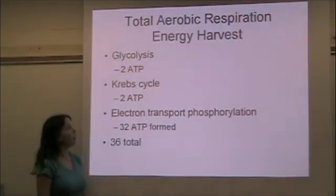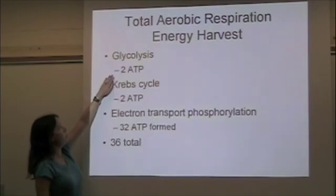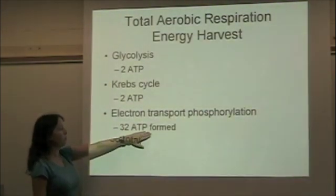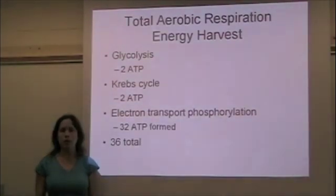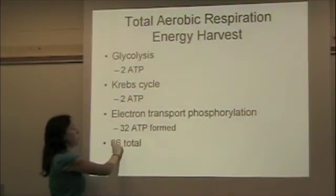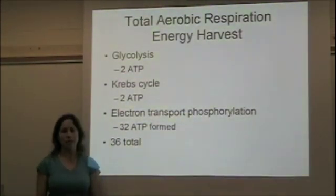Looking at the sum total of aerobic respiration: we made 2 ATP in glycolysis, 2 ATP in the Krebs cycle, and through the ATP synthase and the hydrogen ion gradient, 32 ATP in electron transport phosphorylation. In total, aerobic respiration created 36 ATP.